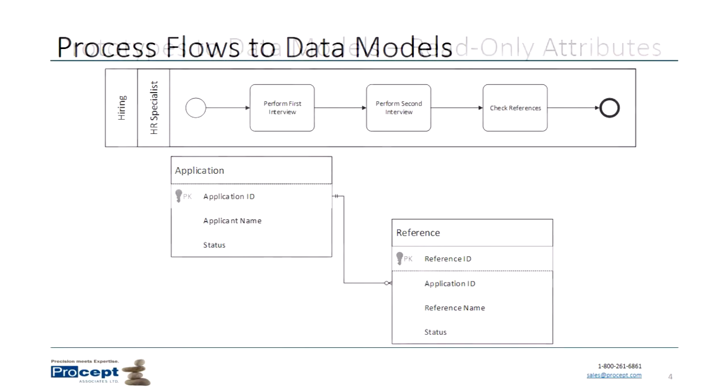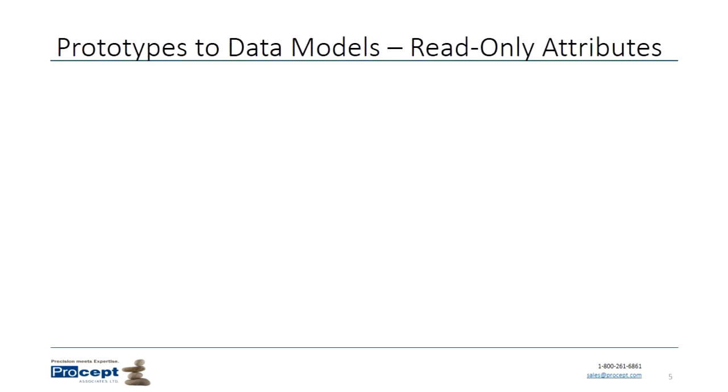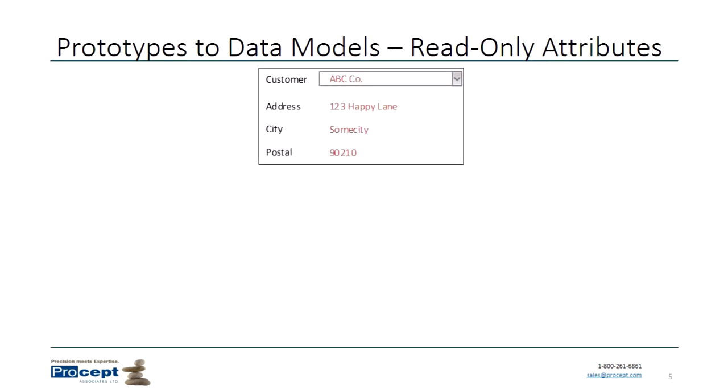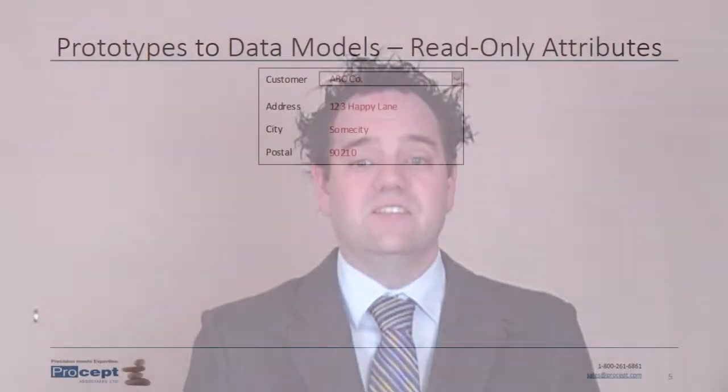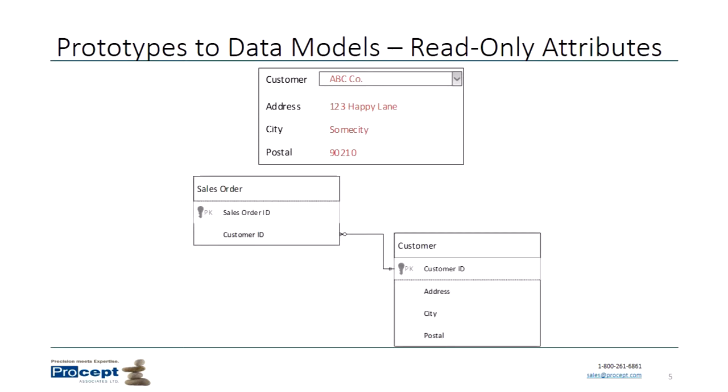The next examples all relate to prototypes. Here we have a wireframe mockup of an order entry system. We're going to create an order for a customer — there's a dropdown to select the customer, and below that we see fields for address, city, and so on. Those fields are read-only. So we select the customer and the delivery fields are read-only. The data model implication is that the sales order entity has the customer as a foreign key, and the address information are attributes of the customer, not of the order.